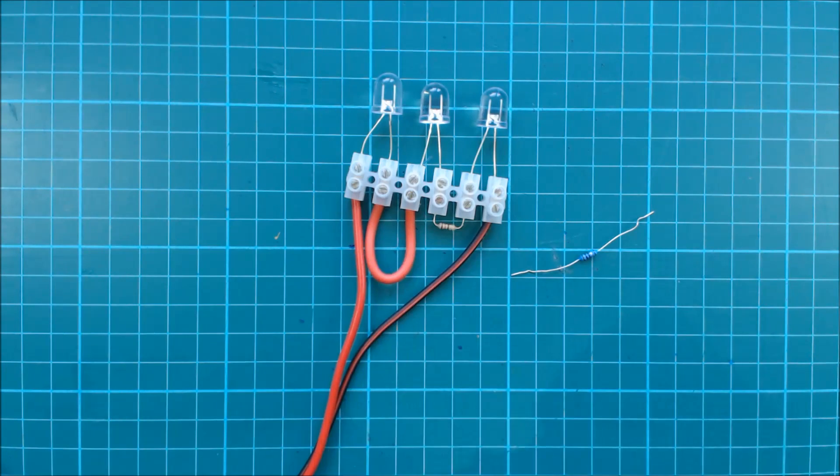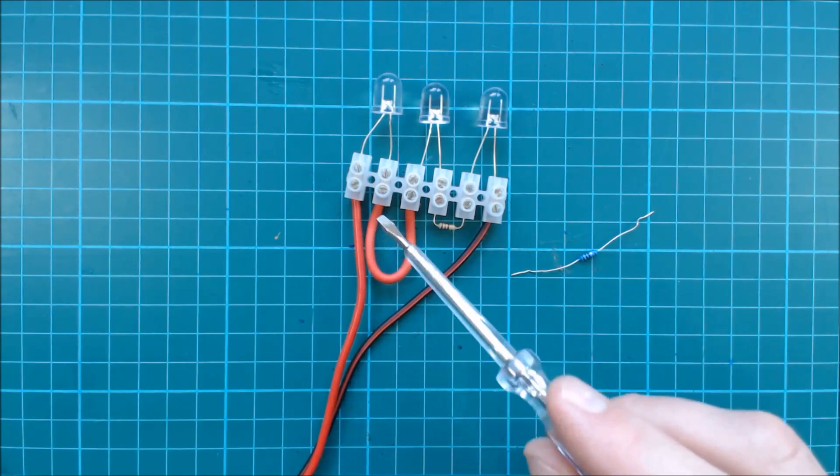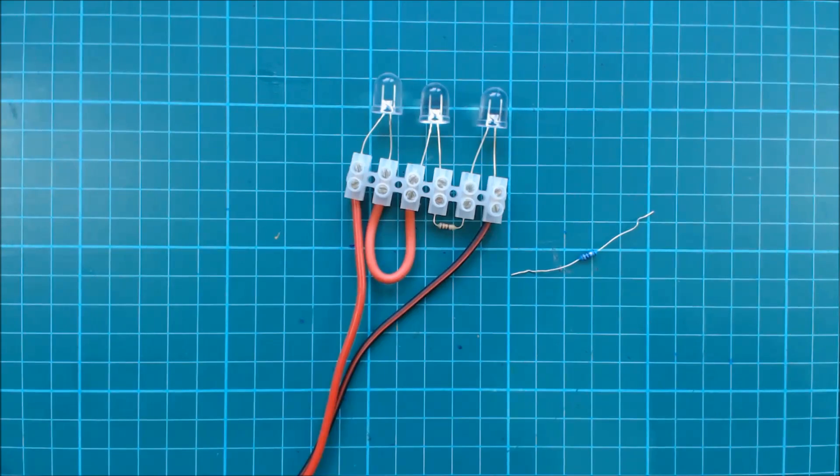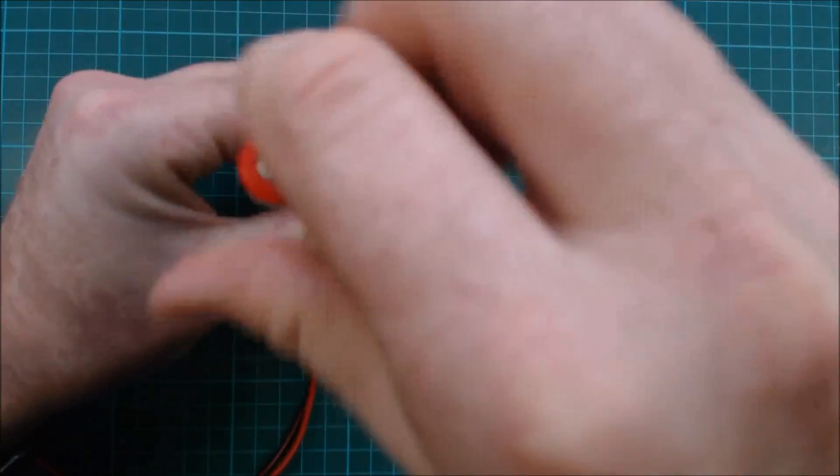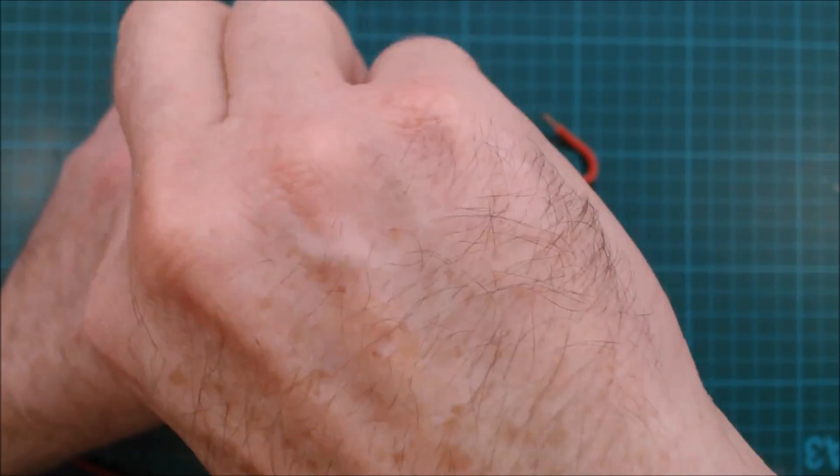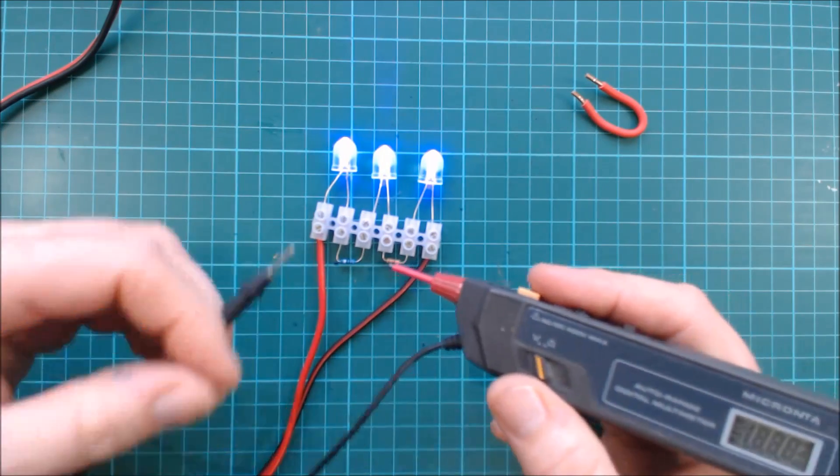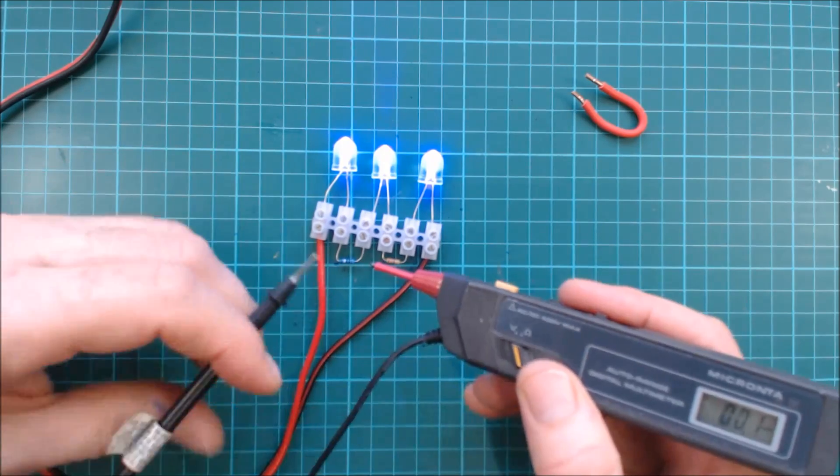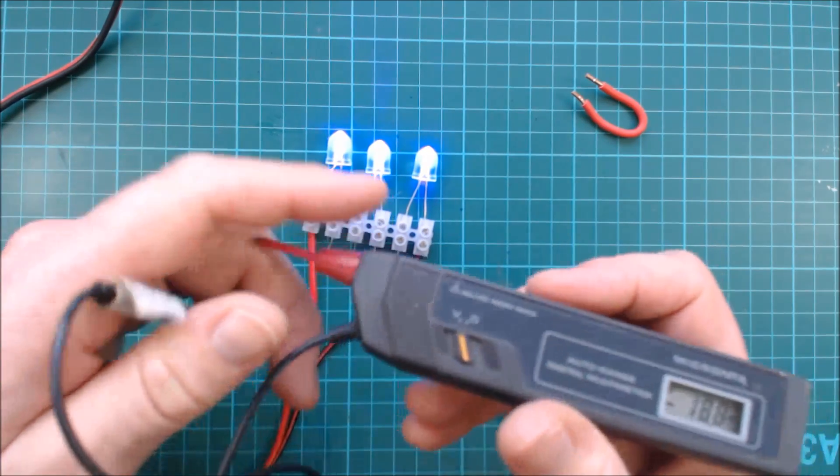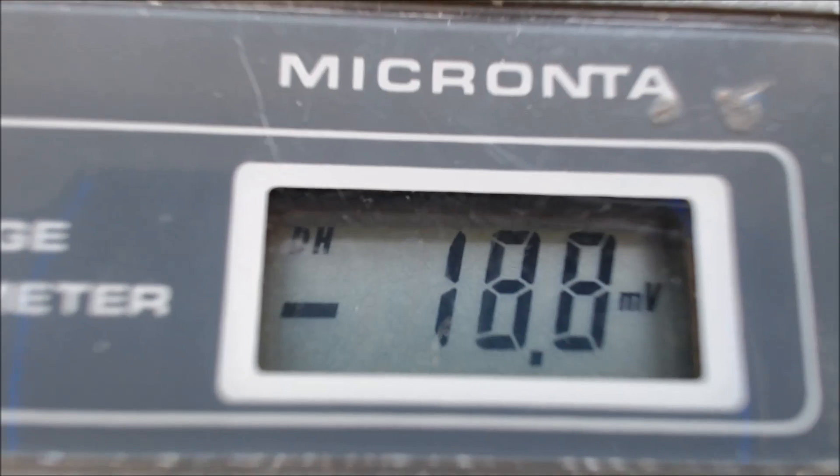So to check the current flowing in the circuit you can either use an ammeter or the other thing that I'm going to do now is I'm going to put a one ohm resistor in series with the circuit. I'm going to remove this link and I'm going to put in the one ohm resistor in there. And the voltage that I measure across there will actually be the current that's flowing in the circuit. So let's just check that works again, which it does. And see what voltage is across this one ohm resistor. So it's 18.8 millivolts which equates to 18.8 milliamps.